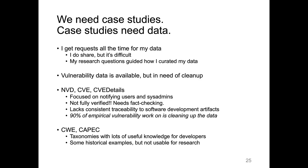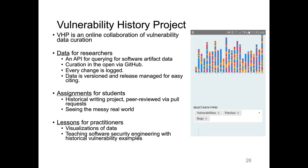The Vulnerability History Project is all about data for researchers, assignments for students, and lessons for practitioners. It is about curating good vulnerability data — correcting things that are wrong, such as when a developer mistakenly references the wrong fixing commit. It's the kind of thing that's very tedious for one graduate student to do, but much easier to crowdsource. We want clean data that's versioned — so a study can cite 'VHP version 2.3 for the Chromium case study' — allowing future updates to data to lead to repeatable science.